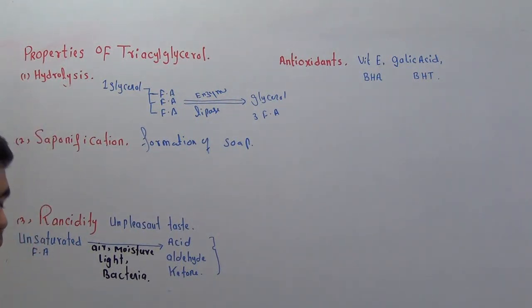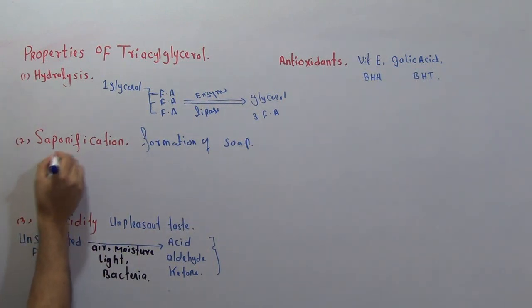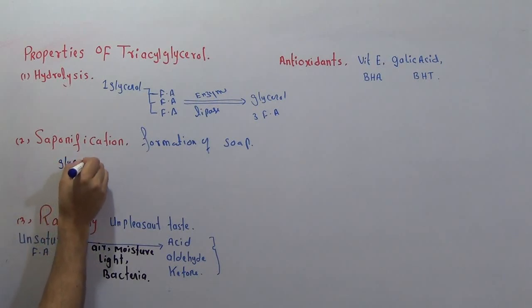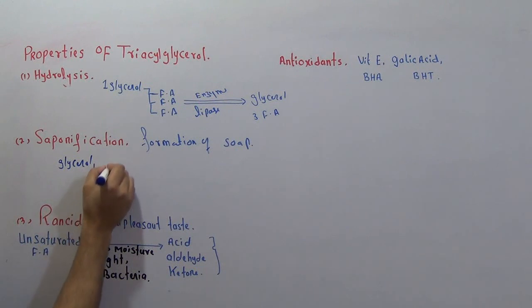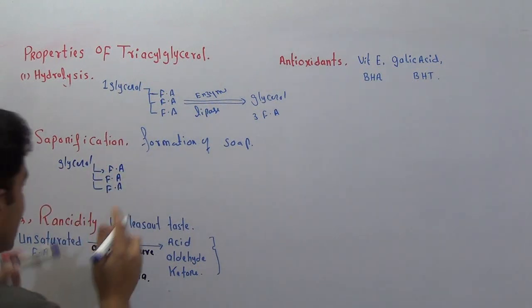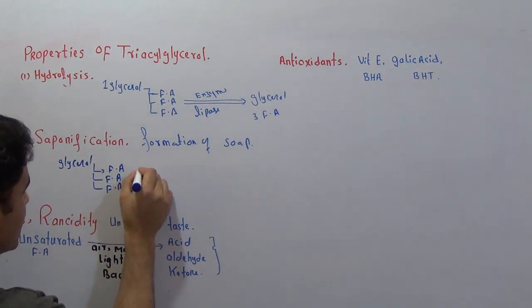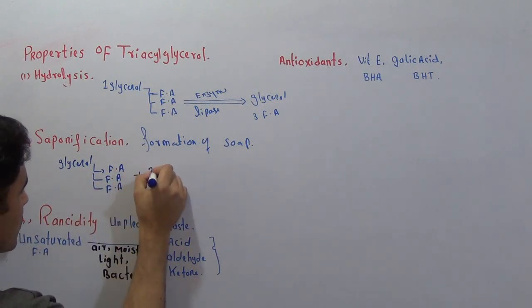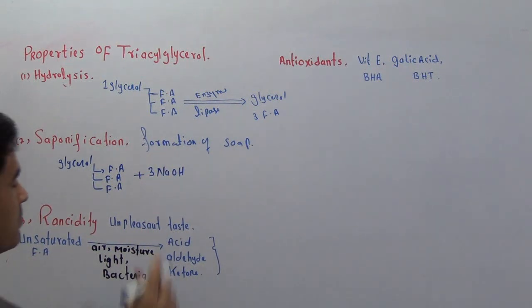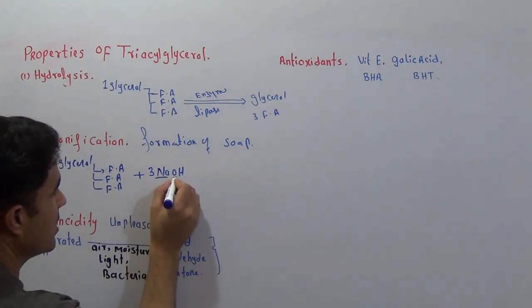Whenever we want to make soap, we need an alkali called sodium hydroxide. Here is a triacylglycerol - glycerol linked with three fatty acids. This is our triacylglycerol.